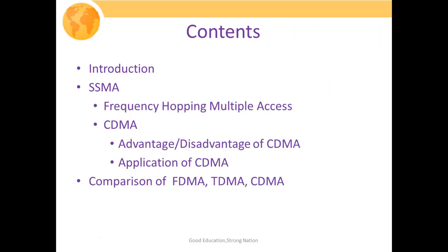These are the outlines: we will start with the introduction, then discuss about spread spectrum multiple access techniques. Depending upon different types of spread spectrum modulation schemes, we will have two variants: frequency hopping multiple access and code division multiple access, which is an example of direct sequence spread spectrum systems. After discussing both, we will cover advantages, disadvantages, applications of CDMA, and finally the comparative analysis among FDMA, TDMA and CDMA.